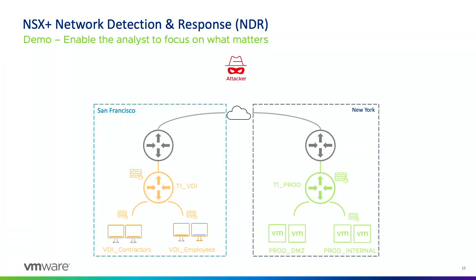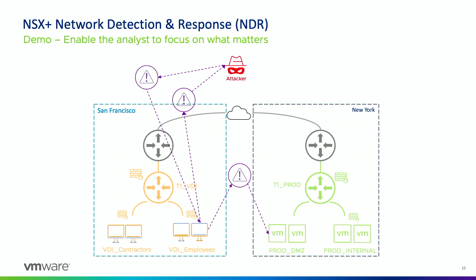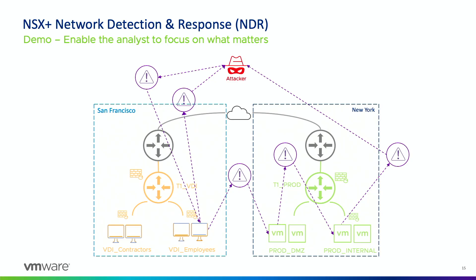Demo time — a live demo of a simple but realistic attack scenario involving two sites: San Francisco on the left and New York on the right. We'll see an initial download on a VDI desktop in San Francisco, command and control activity, lateral movement from VDI to a production server in the DMZ in New York, then another step of lateral movement to a database server on the internal network, and finally exfiltration. Note that NSX is supposed to stop this — but for the demo we're allowing these things to demonstrate detection capabilities before proper segmentation and IPS prevention mode are implemented.